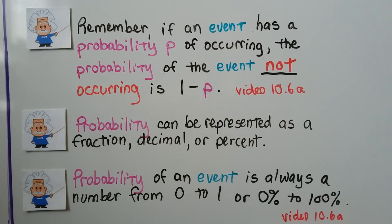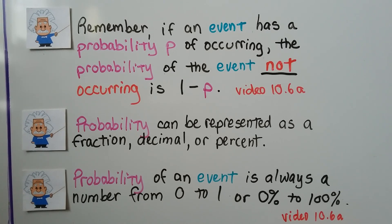Remember, if an event has a probability P of occurring, the probability of the event not occurring is 1 minus P — we talked about that in the last video. Probability can be represented as a fraction, decimal, or percent. The probability of an event is always a number from 0 to 1, or 0% to 100%.